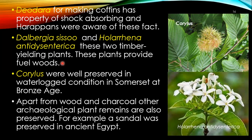The timber-yielding plants Dalbergia sissoo and Holarrhena antidysenterica provided fuel wood. Corylus was well preserved in waterlogged conditions in Somerset from the Bronze Age. Apart from wood and charcoal, other archaeological plant remains are also preserved. For example, a sandal was preserved in ancient Egypt.